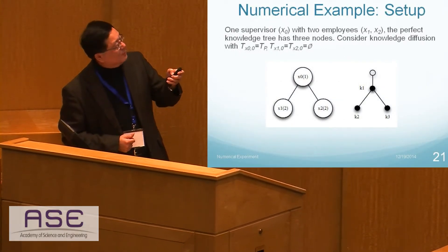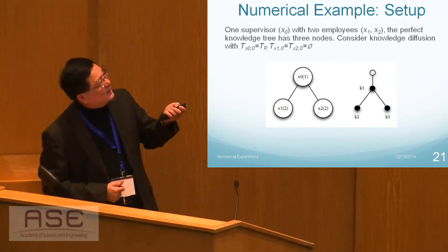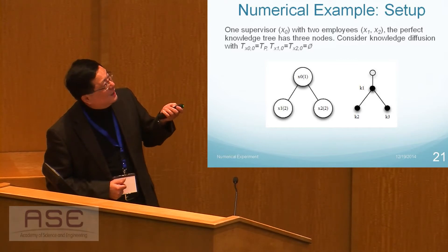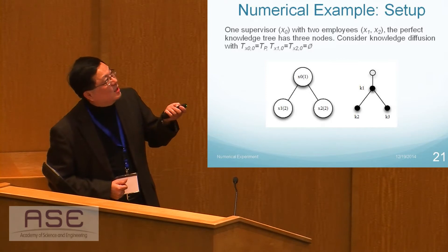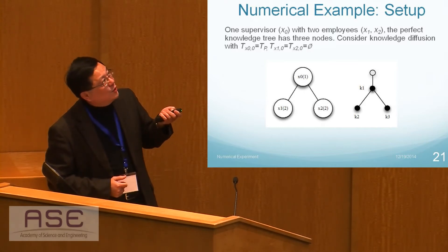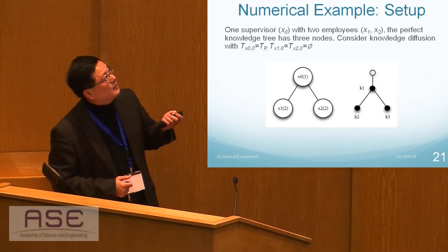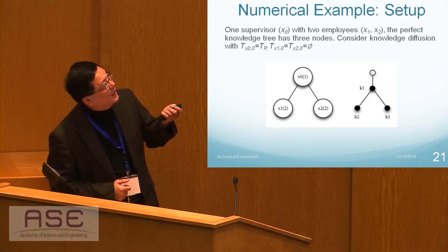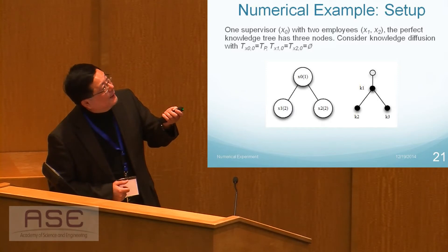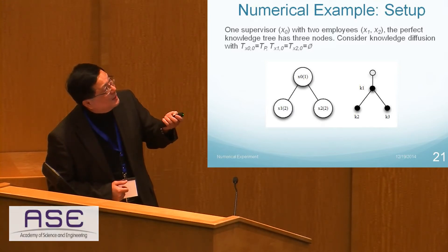We provide numerical examples — one for diffusion. We have three people: one supervisor and two workers, where the two workers have different personalities. One worker can study very well but is not very sociable; the other does not study as much but is very social. The supervisor tried to transfer knowledge to these two workers. The social connection from supervisor to worker one and worker two differs across cases, with some cases showing closer connections to one worker than the other.